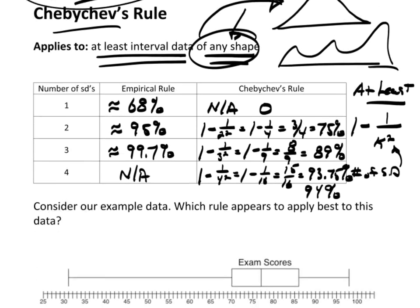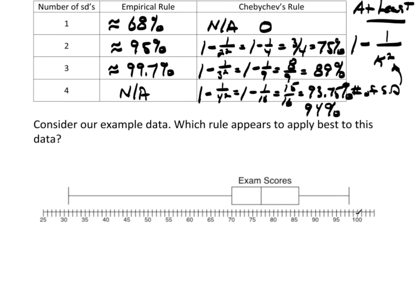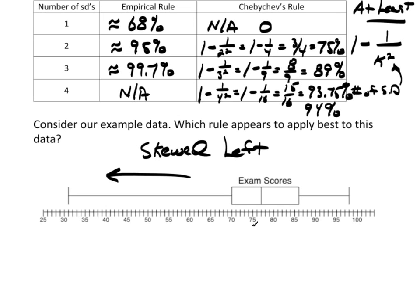Looking at our data, which rule would best apply? This data is definitely skewed left. So if I want to identify whether an observation is unusual or describe the distribution in some way other than simply a graph, then Chebyshev's rule is absolutely the way to go. This would not be a good candidate for the empirical rule at all — Chebyshev's rule is the right choice here.